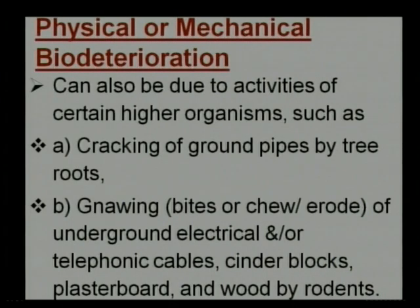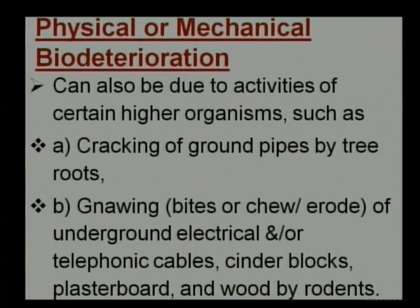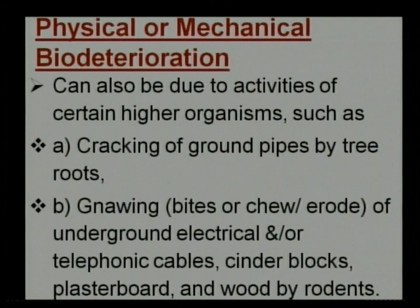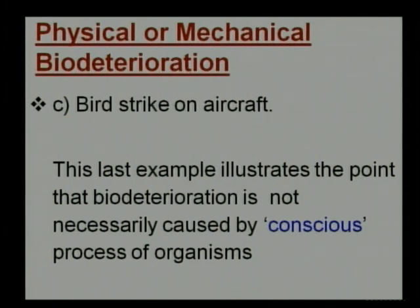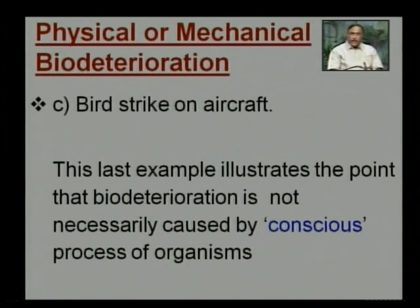Similarly, the second kind of physical or mechanical bio-deterioration is due to the activities of certain higher organisms. Examples include cracking of underground pipes by tree roots as the tree grows, and gnawing by rodents — they chew pipes, erode them, or eat away wires, cables, and wooden materials buried in soil. A third example, commonly in the news, is bird strikes on aircraft. All these examples clearly illustrate that bio-deterioration is not necessarily caused by conscious processes of the organisms — it is not done intentionally, but happens naturally.